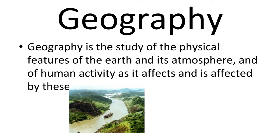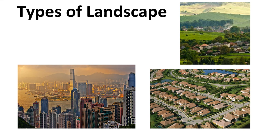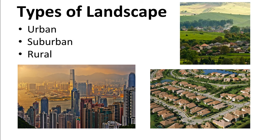We'll start by looking at the different types of landscapes, beginning with landscapes that are influenced by human growth and development. Here we have three different types: the urban landscape, which is a very large city; the suburban landscape, which is where people live outside of the main city; and a rural landscape, where people live amongst the countryside.